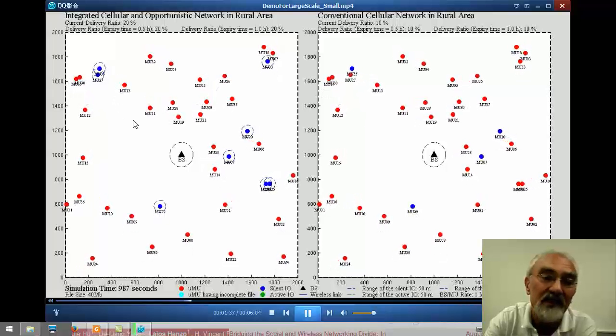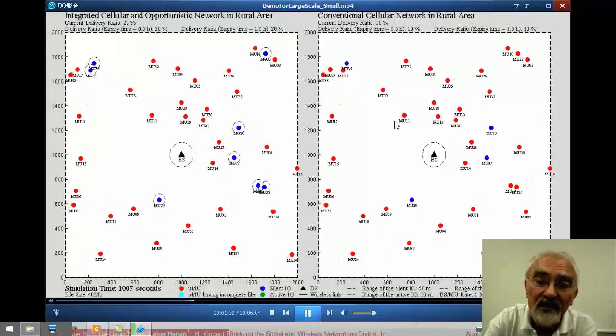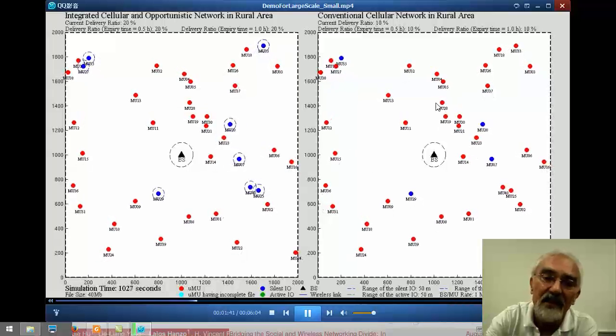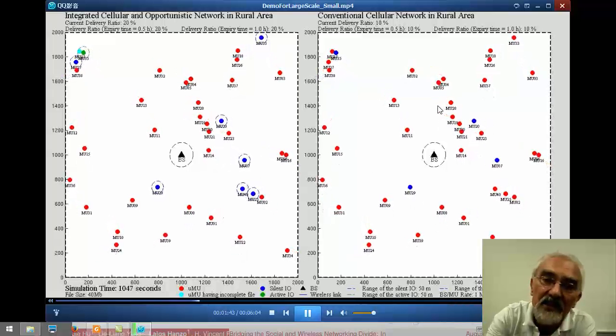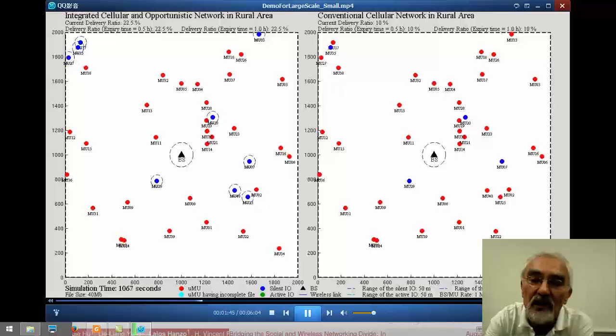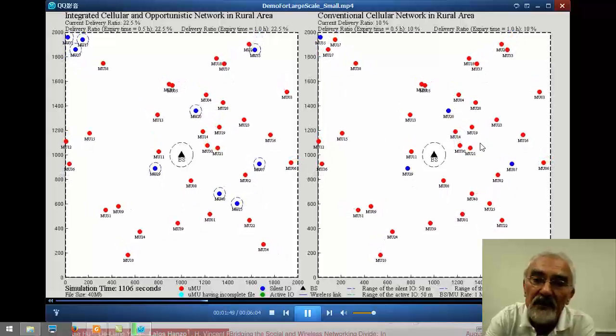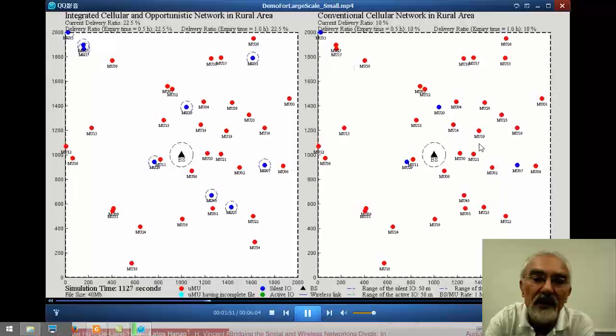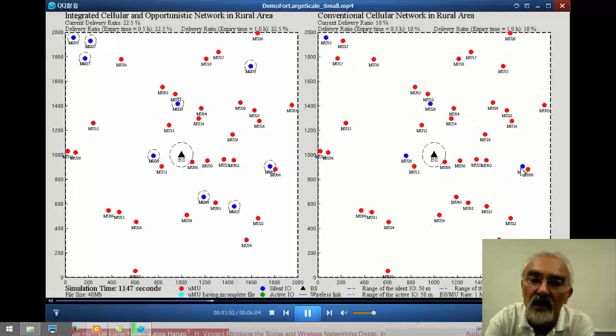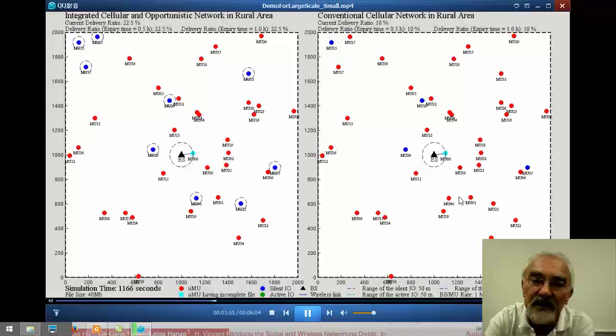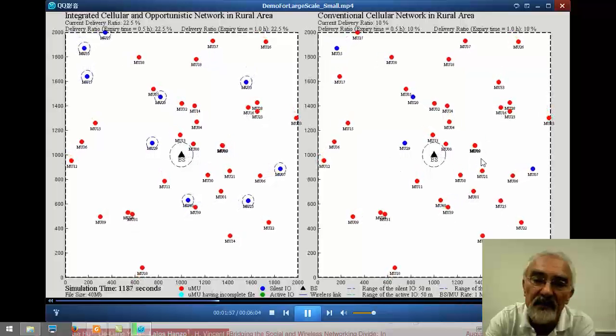So, on the right-hand side, as a benchmarker, we can see a conventional cellular network operating in a rural area where there's no social networking involved. And therefore, of course, there's only a couple of dark blue dots, because only a few of them have succeeded in downloading the contents so far.